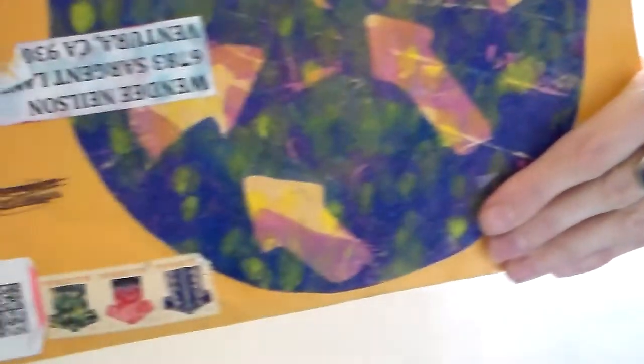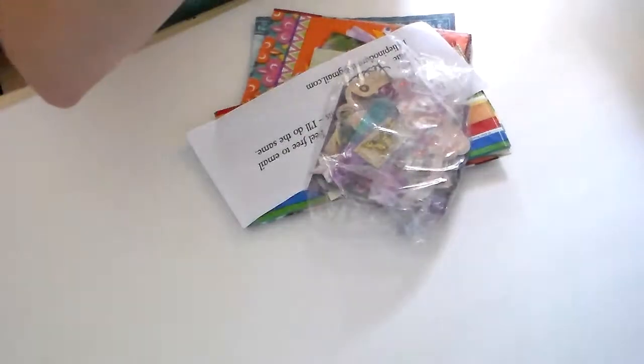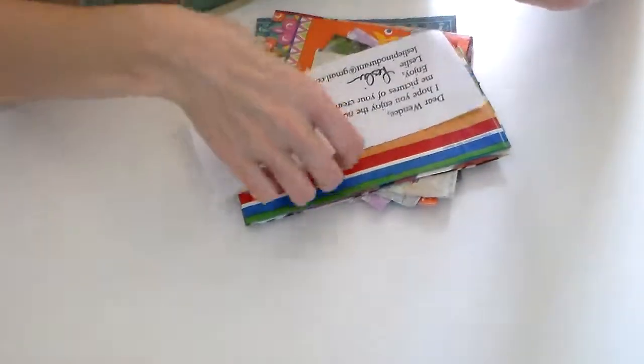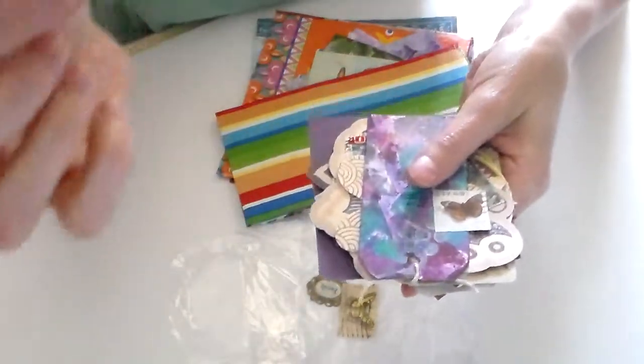And this one was from Leslie D in Westminster Colorado, and it looks like she decorated the outside of the package. I think that might be a jelly plate and she decorated that. That's so cool because I don't have a jelly plate. And she sent me a ton of little, I guess ephemera is what this is called.